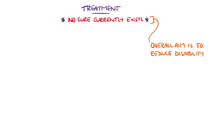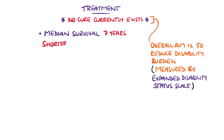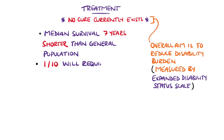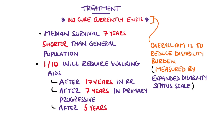No cure currently exists and the focus is on reducing the disability burden, measured mostly with the Expanded Disability Status Scale. The median survival rate is seven years shorter in patients with MS than the general population. It is estimated that around one in ten patients with relapsing MS will require a walking aid within 17 years of onset; in primary progressive MS this time is only seven years, and from the onset of secondary progressive MS it is only five years.